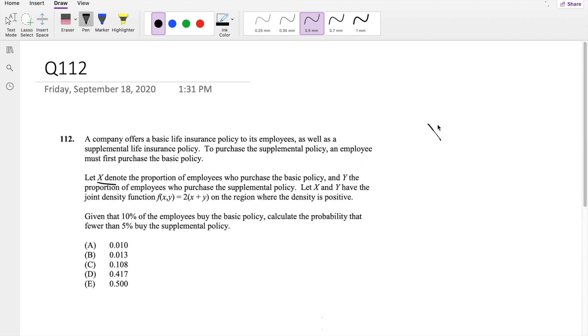So right here, X is denoting the proportion of employees who buy the basic policy, and Y denotes the probability that they buy a supplemental policy. And then we're asked to find the probability that given they have basic policy, 10% have basic policy, what is the probability that fewer than 5% buy a supplemental policy? So this is what we're asked to find.